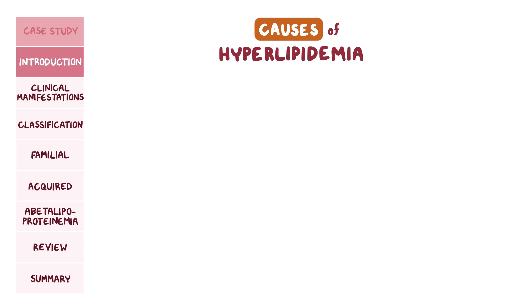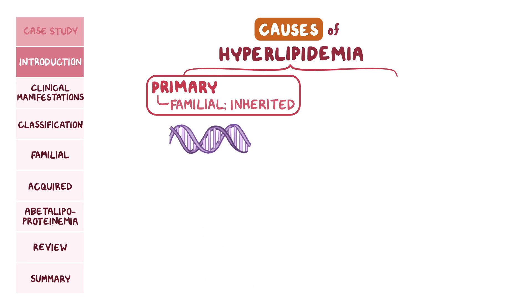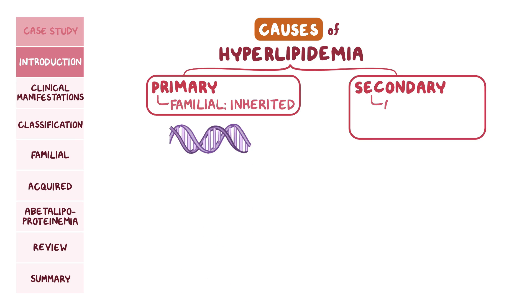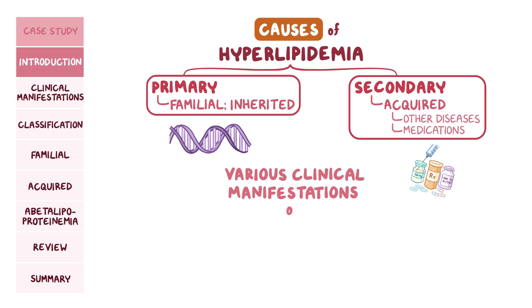The causes of hyperlipidemia can be broadly classified into primary hyperlipidemias, which are the familial inherited hyperlipidemias, and secondary or acquired hyperlipidemias, which are caused by various other diseases and medications. Depending on the type and severity, hyperlipidemia can result in various clinical manifestations, or it can be completely asymptomatic.